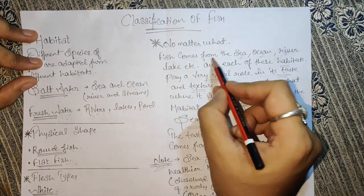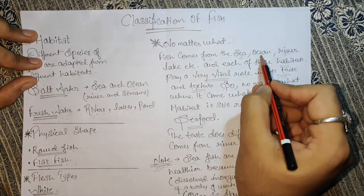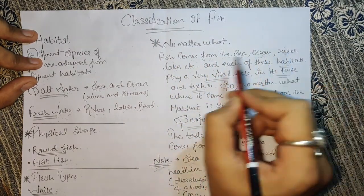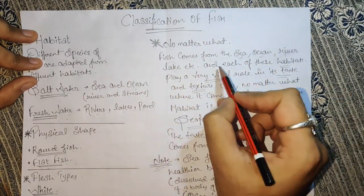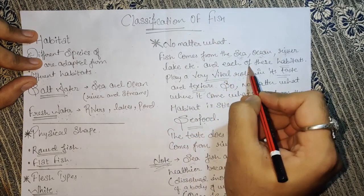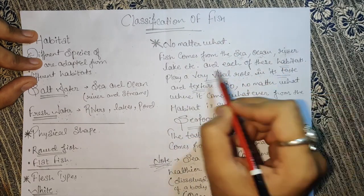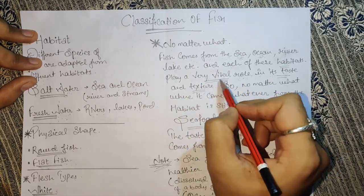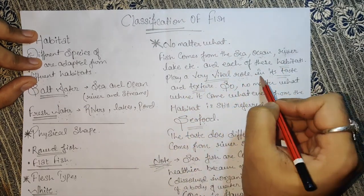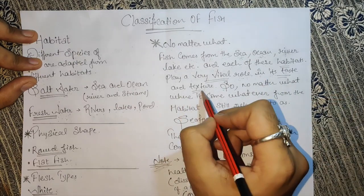Fish comes from the sea, ocean, river, lake, etc. And each of these habitats plays a very vital role — a very important role — in the taste and texture of the fish.